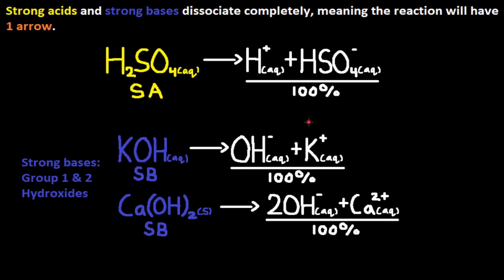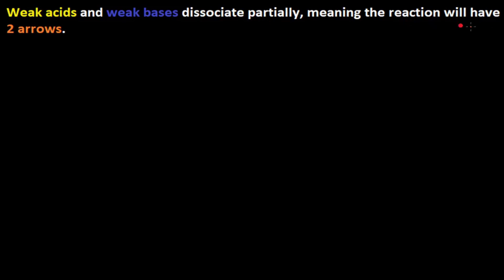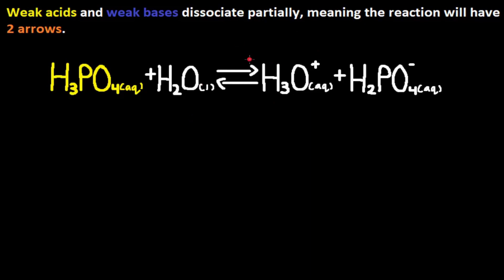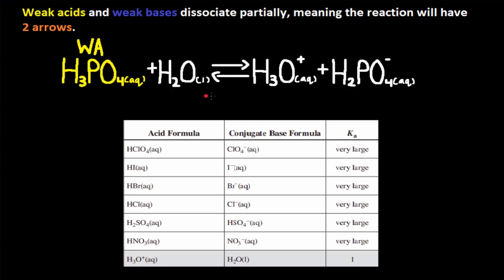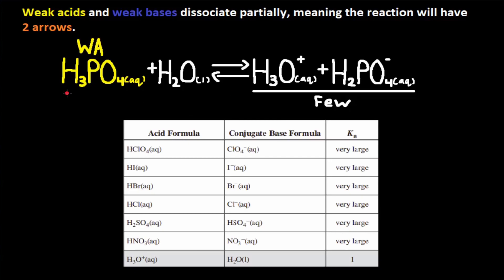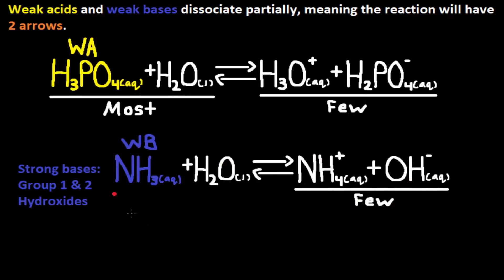On the other hand, weak acids and weak bases dissociate partially, meaning the reaction will have two arrows. The dissociation reaction of H3PO4 has a double arrow since H3PO4 is a weak acid — it is not listed above H3O⁺ in the data booklet. This double arrow means H3PO4 dissociates partially into H3O⁺ and H2PO4⁻ ions, so we have only a few of these ions and mostly the initial amounts of H3PO4. Similarly, NH3 is a weak base and will have a double arrow — only group 1 and 2 hydroxides are strong bases. NH3 dissociates partially into NH4⁺ and OH⁻ ions. So whenever we have weak acids or weak bases, we can leave them as is, since after dissociation we will have only a few of their ions.